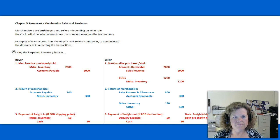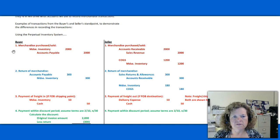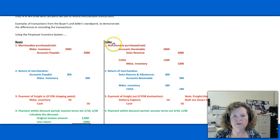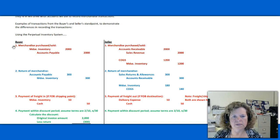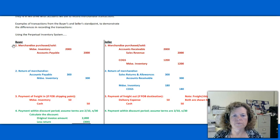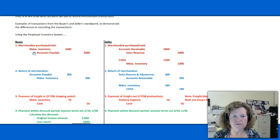We're using the perpetual inventory system. I've set up one side of the worksheet showing what the journal entries would look like for the buyer, and then on the right-hand side, the same transaction, what the journal entries would look like for the seller. The first transaction is merchandise purchased or sold. From the buyer's standpoint, they're going to debit merchandise inventory for $2,000 and credit accounts payable for $2,000.